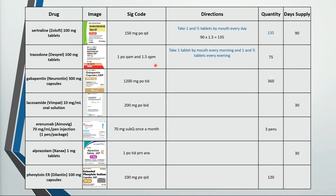75 divided by 2.5 tablets a day comes out to a 30-day supply. This is take four capsules by mouth three times a day. They're taking 12 capsules a day, so 360 divided by 12 is a 30-day supply.